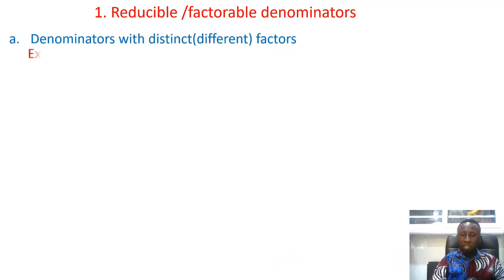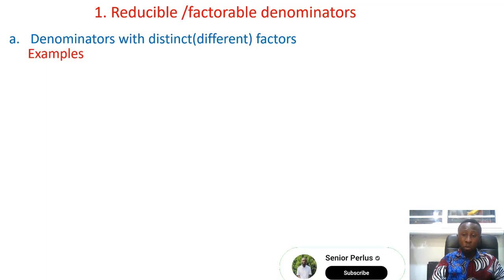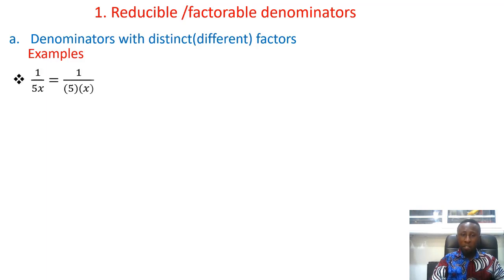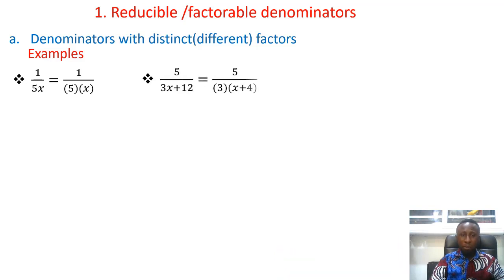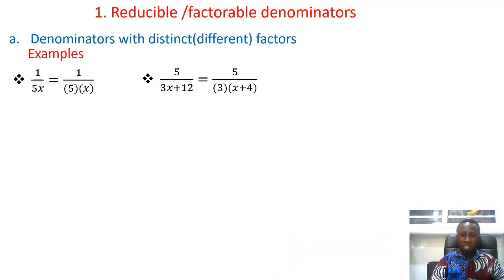First, we have denominators with distinct or different factors. Under polynomials, when we talk about discriminants and the nature of roots, when the roots are distinct. So we have 1 over 5s — the factors are 5 and s. Another example: 5 over (3s + 12). Factorizing gives us 3(s + 4), so the factors of the denominator are 3 and (s + 4).